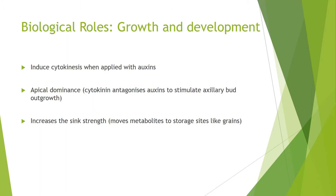For biological roles, I'll pick three. The first illustrates a key point about how cytokinin and auxin signalling are often intertwined. The second is apical dominance, whereby growth from the main shoot is preferred or favoured over that from embryonic lateral buds.